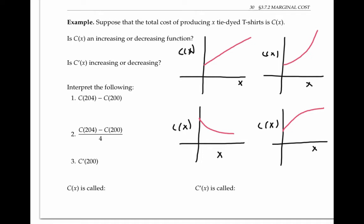Now I would like to suggest that C(x) should be an increasing function of x, because it's going to cost more money to make more t-shirts. You need more supplies and labor. So this function is out.